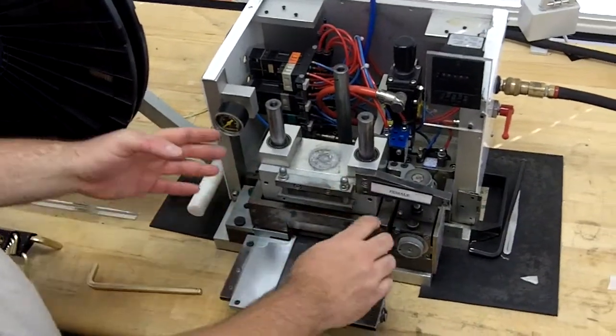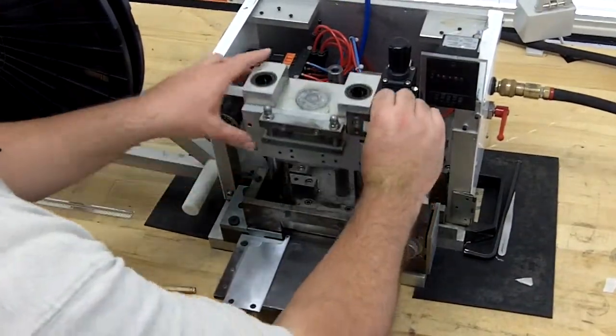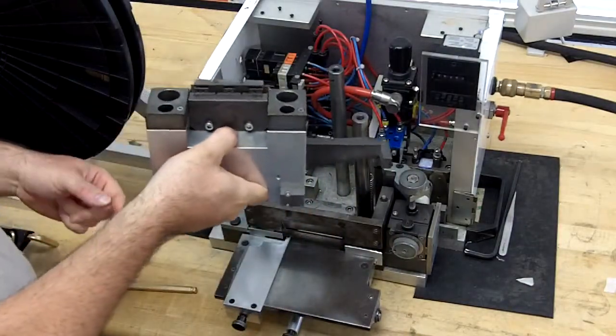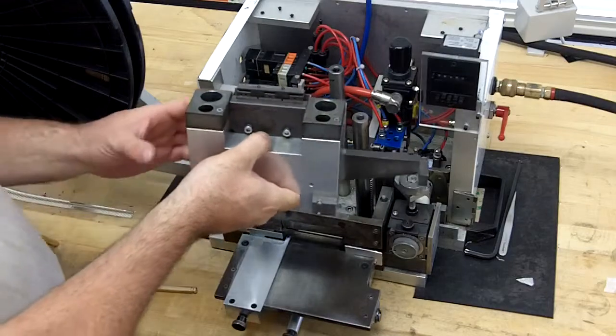Next, we're going to slide the upper die assembly off. This houses the female and or male die that we'll be also changing at a later time in this video.